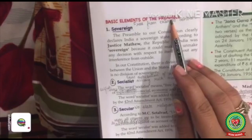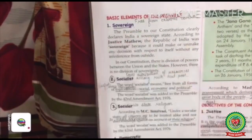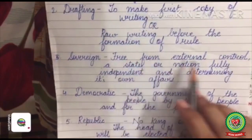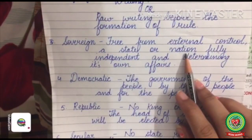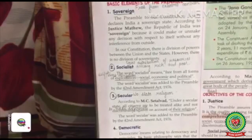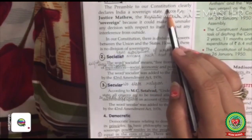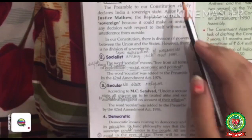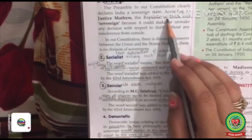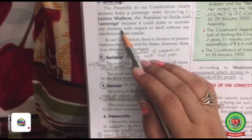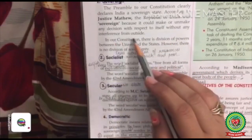Basic elements of preamble. Number one: Sovereign. Sovereign means free from external control — a state or a nation fully independent and determining its own affairs. The preamble to our Constitution clearly declares India a sovereign state. According to Justice Matthew, the Republic of India was sovereign because it could make or unmake any decision with respect to itself without any interference from outside.